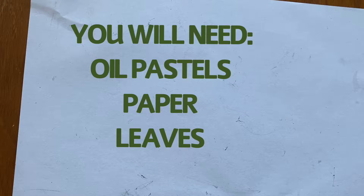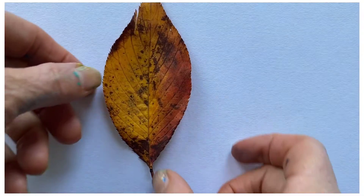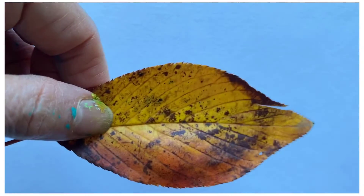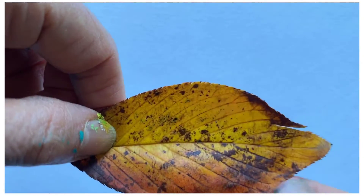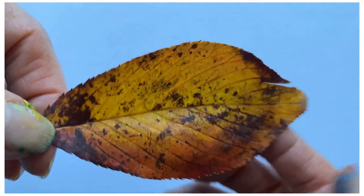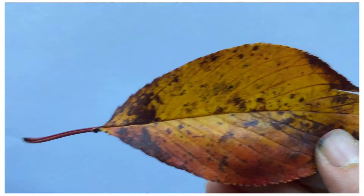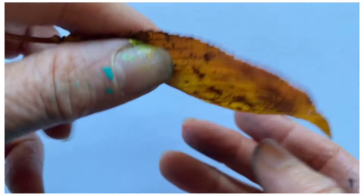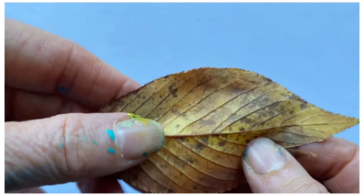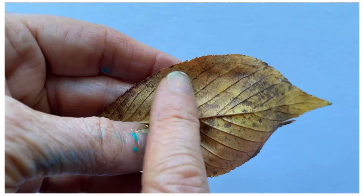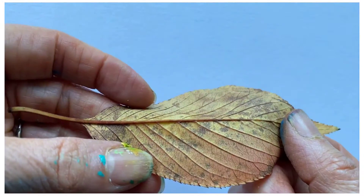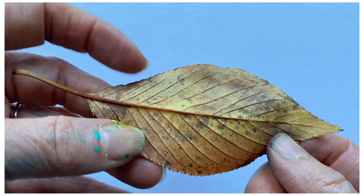Make sure you have your leaves right near you. Look at your leaf so carefully — see where there's yellow, and orange, and red, and brown as well. Notice when you turn it over, there are veins along the back that you can feel, and you can see them on the front and the edge of the leaf.